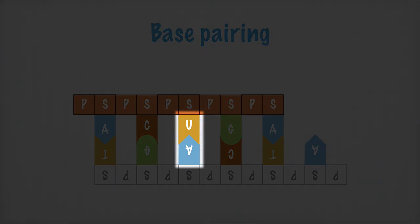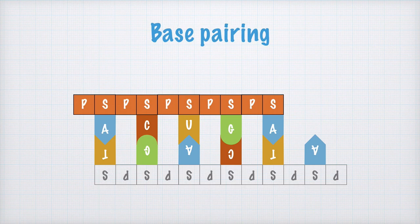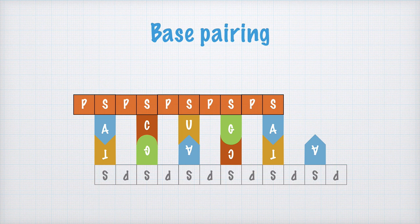But look here, if we have an A in the DNA molecule it always pairs with a U, that is uracil, in the RNA molecule. This is one of the ways that RNA differs from DNA. Why the RNA uses uracil instead of thymine is unfortunately beyond the scope of this course. You'll just have to learn that that's the way it is.